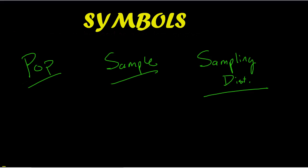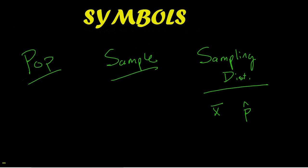So we have a population distribution — what a population looks like in shape, center, and spread. We have an individual sample — what that sample looks like in shape, center, and spread. And then we have a sampling distribution. A lot of students understand what a population looks like and what one sample looks like, but we need to make sure you understand that a sampling distribution represents all different values of a particular statistic. We look at either means or proportions — not a single sample mean or proportion, but all of them.